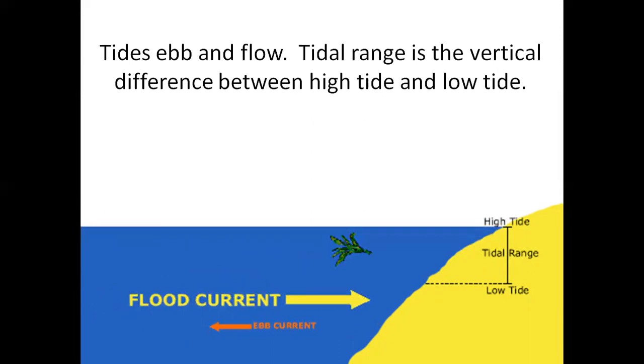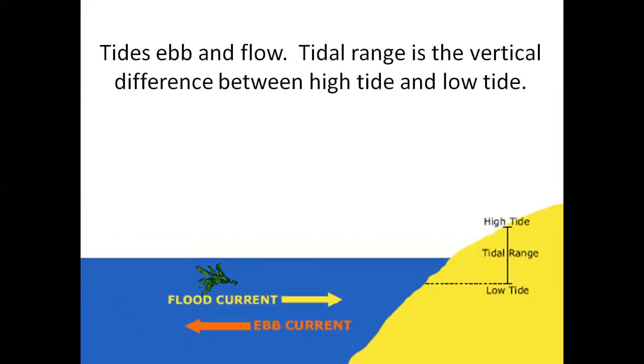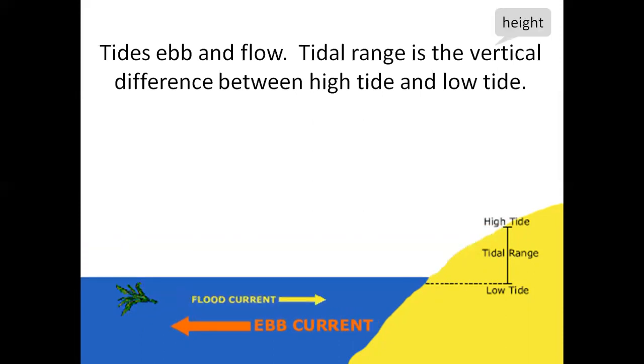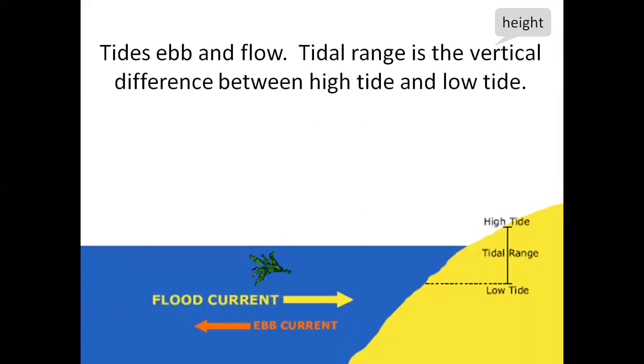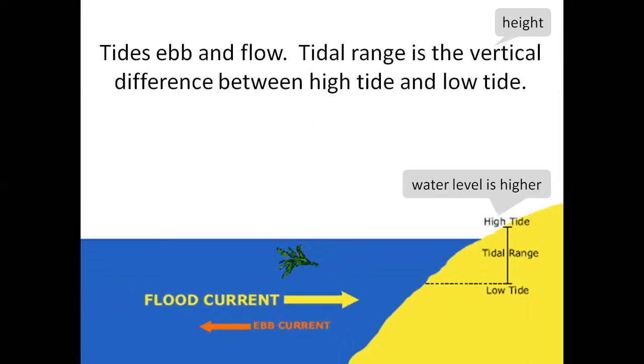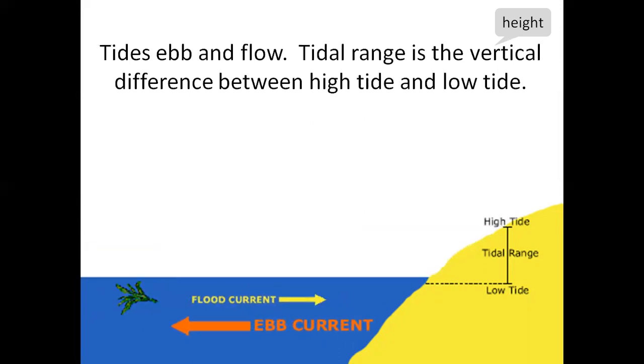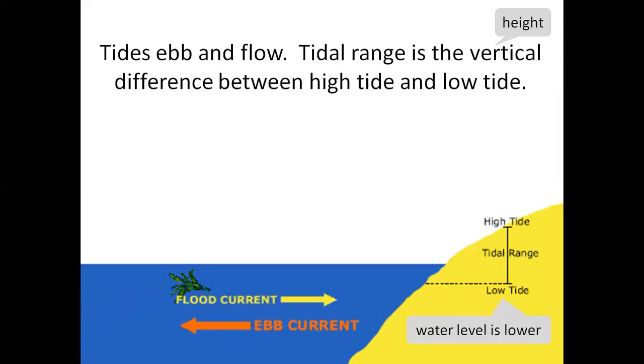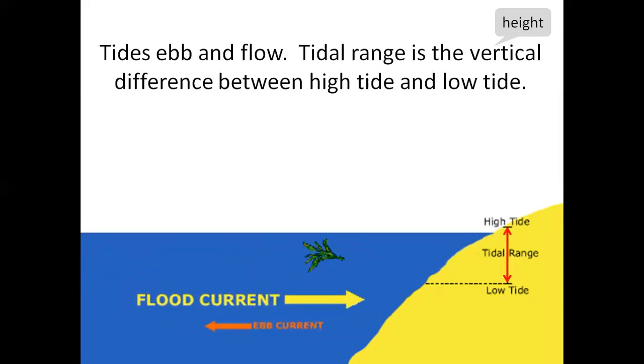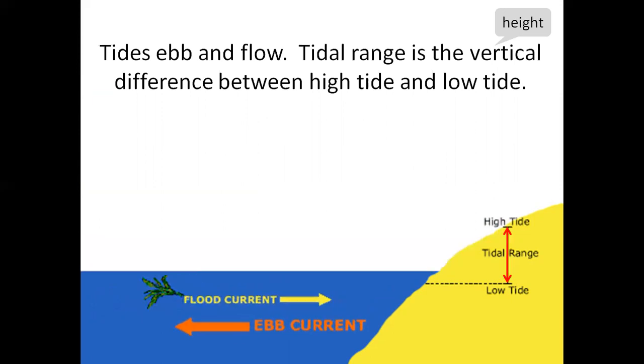The tidal range is the vertical difference between high tide and low tide. We could say the height difference. High tide is when the water level is higher, low tide is when the water level is lower, and the tidal range is the height difference or vertical difference.